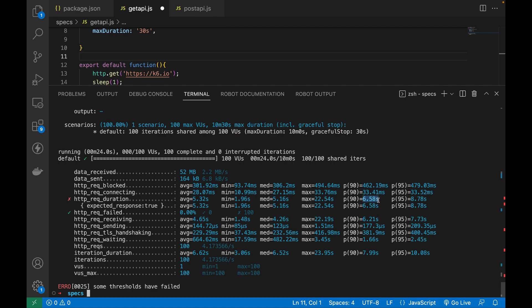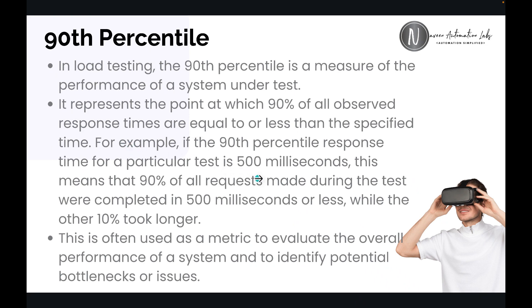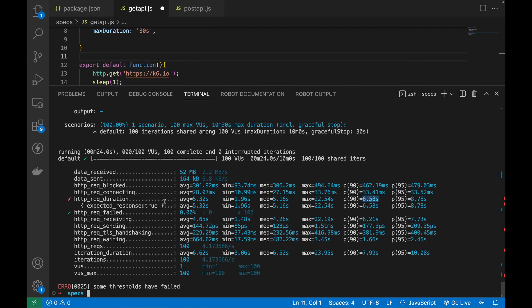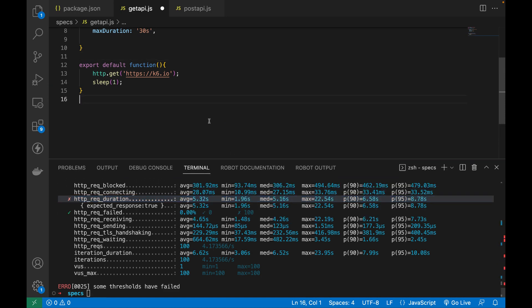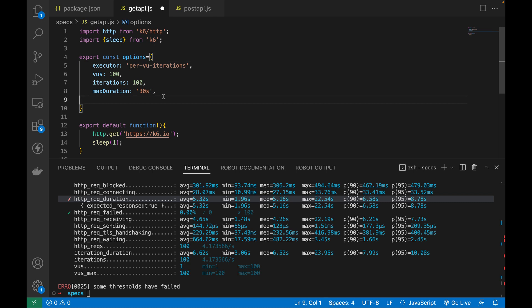So 90% of users got 6.58 seconds — that's clearly shown in the output. Later in the next session, you can define threshold values for the 90th and 95th percentile, where you put a hard assertion: for example, I'm expecting 90% of users should get a response time within 500 milliseconds, or 300 or 200 milliseconds — that is the expectation from this particular application. Same applies to the 95th percentile. These two terms are very important in performance testing and load testing, and K6 supports them. It gives the percentile metrics in the results, and in the next session I'll show you how to define threshold values — explicitly configuring that your 90th percentile should be less than a particular value, and similarly for the 95th percentile.